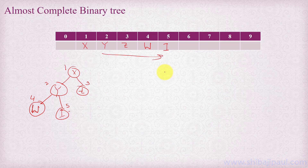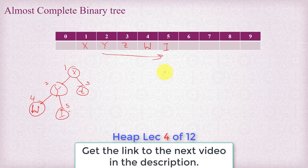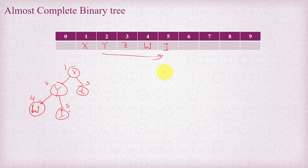That's how we can represent an almost complete binary tree using a one dimensional array. We are going to use this trick to represent a heap, since a heap is an almost complete binary tree. We can easily represent a heap using a one dimensional array and find the left child, right child, or parent of any node. In the next tutorial I'm going to formally define heap, explain its basics, and then cover the algorithms for heap insertion and heap deletion. Thank you very much for watching.